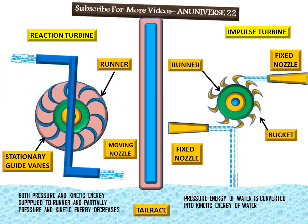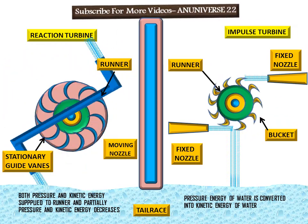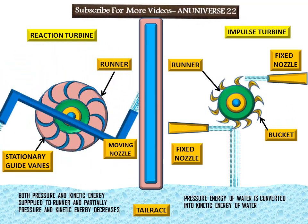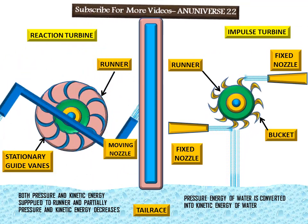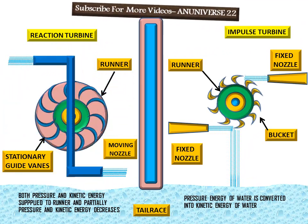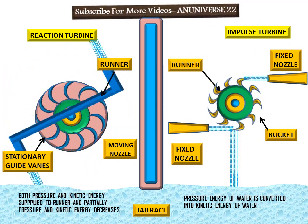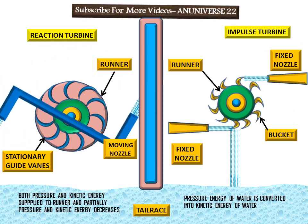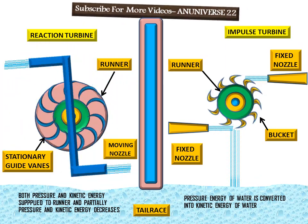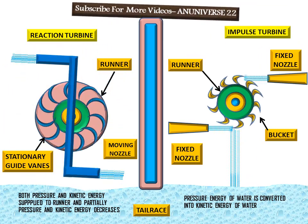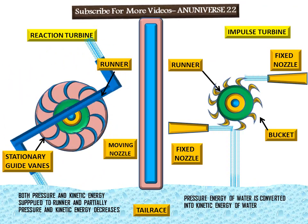The reaction turbine is completely enclosed by a casing. A tube connected at the outlet of the turbine to the tailrace is known as a draft tube, and its purpose is to raise the effective head acting on the turbine. In the impulse turbine, no draft tube is needed since it operates at atmospheric pressure. However, in the reaction turbine, pressure varies, so a draft tube is required to maintain the effective head.